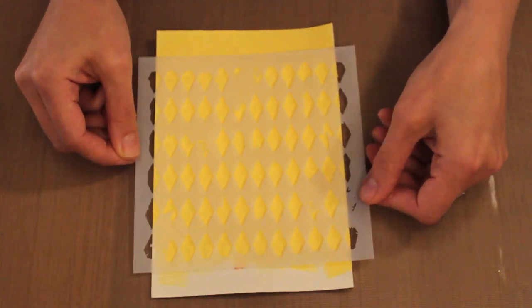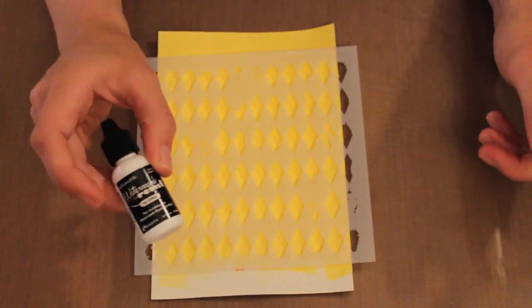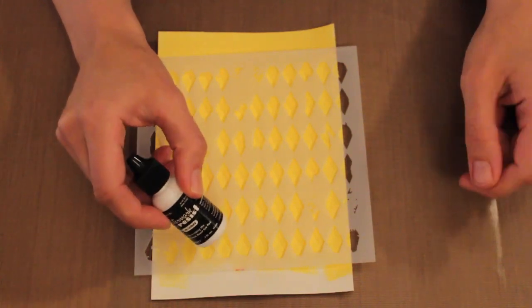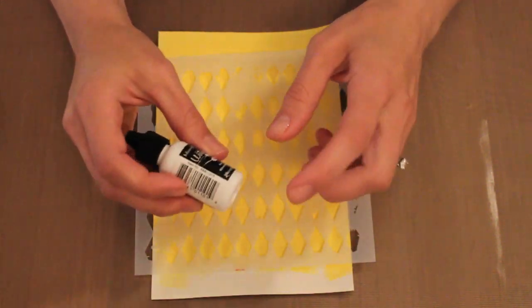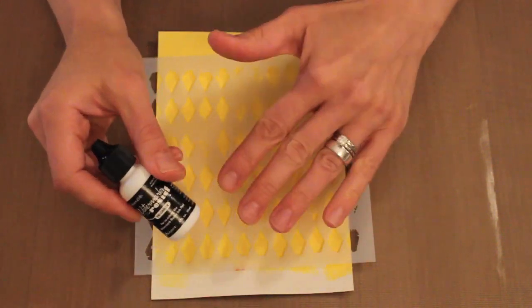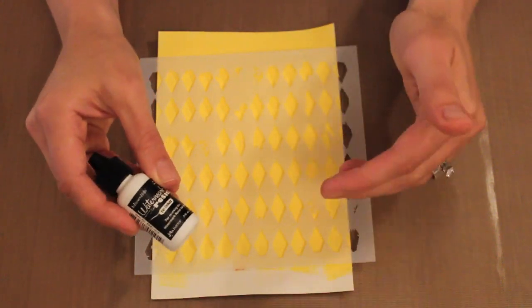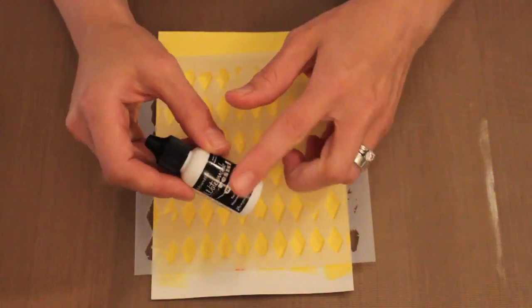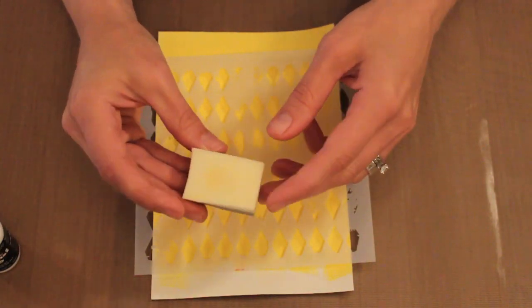I'm going to simply place it down onto my paper. The next thing I need is a watermark resist reinker. It's really important that you have the reinker rather than the pad because the reinker is going to make it a lot easier to apply the watermark through the stencil.